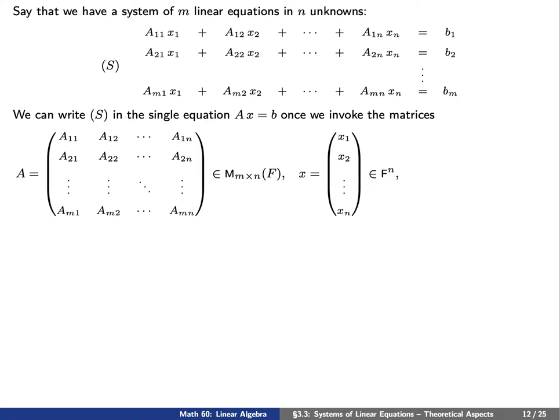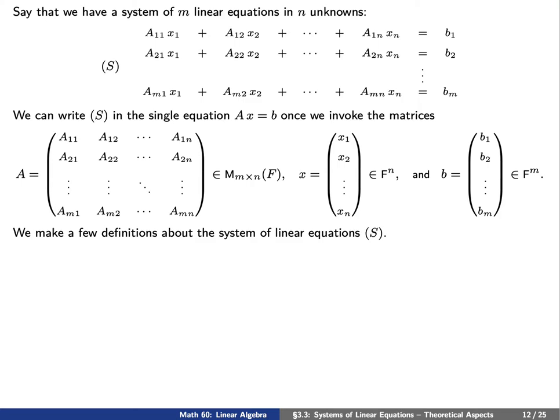Here X is an N-dimensional vector consisting of the variables we're trying to solve for, and B consists of the scalars on the right-hand side of the equal sign. We'll make a few definitions about this system of linear equations.